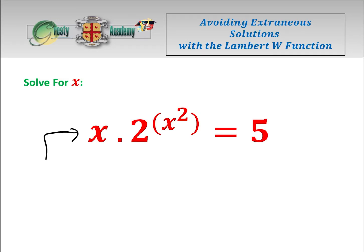Today we're solving x·2^(x²) = 5, and the method we're going to use involves possibly